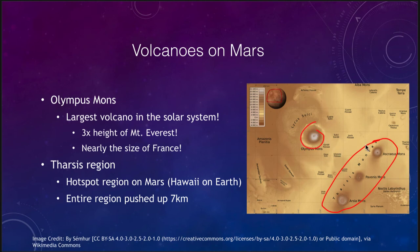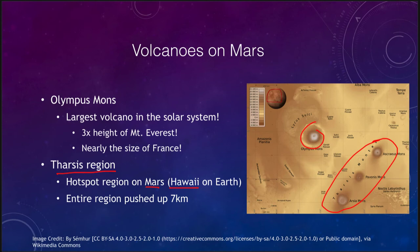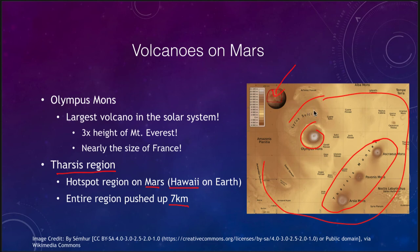Here are those three volcanoes noted on the original map of Mars, and here is Olympus Mons. This entire region is called the Tharsis region, and that is a hotspot region on Mars, very similar to Hawaii here on Earth. However, the chain is not because of plate motions — it's because of three separate hotspots, one for each of these volcanoes, and they would have continually erupted in the same spot over and over again. Because of massive pressures underneath, this entire region has actually been pushed up by seven kilometers above the regular surface level of Mars.